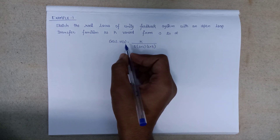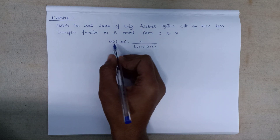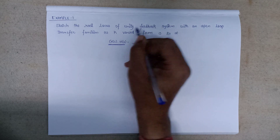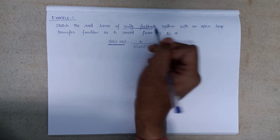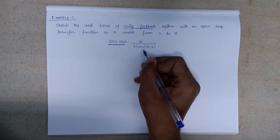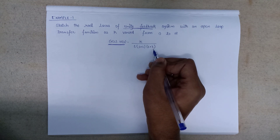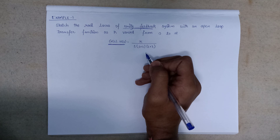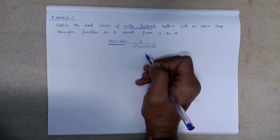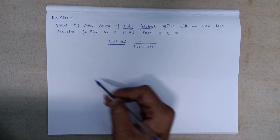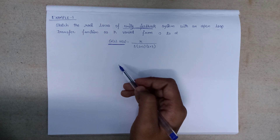In this question, we are given that the open loop transfer function G times H with unity feedback is given as k over s(s+2)(s+3). We have to plot the root locus by following all the rules discussed in the previous lecture.